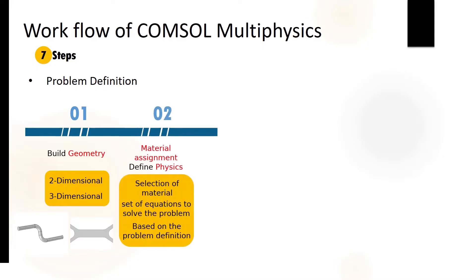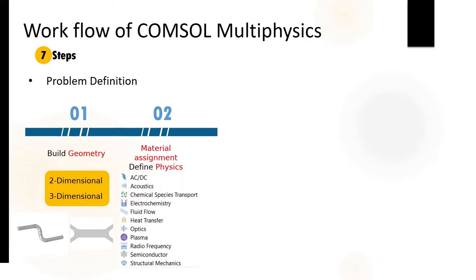The second step is material assignment and defining the physics. For material assignment, COMSOL has two options: you can assign material from the built-in libraries or define your own material. When it comes to physics, it depends on the problem definition — based on what you are trying to solve, you select the appropriate physics. Physics is basically a set of equations used to solve the problem. You can use AC/DC, acoustics, chemical species transport, electrochemistry, fluid flow, heat transfer, optics, plasma, radio frequency, semiconductor, and structural mechanics.